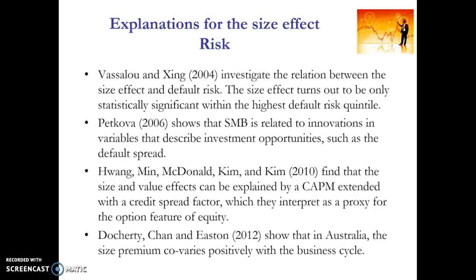If we are considering an investment in small firms or trying to exploit the size effect, we have to identify what the explanation might be for this phenomenon and hence what investment philosophy it might align with. There's a whole lot of evidence that suggests the size effect may be just a compensation for risk — specifically, dimensions of risk outside the systematic risk of beta measured in the CAPM. Vassal and Zing look at this argument and identify that small firms have higher exposure to default risk, and that may potentially be what's driving this small firm effect.